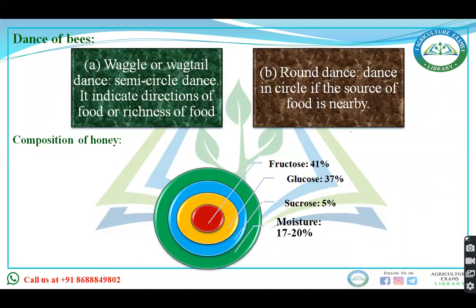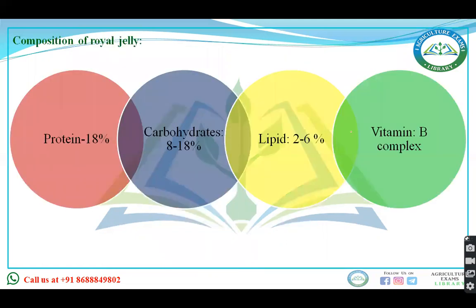The composition of honey includes 41% fructose, 37% glucose, 17–20% moisture, and 5% sucrose. Royal jelly contains 18% protein, 8–18% carbohydrate, 2–6% lipid, and vitamin B complex.